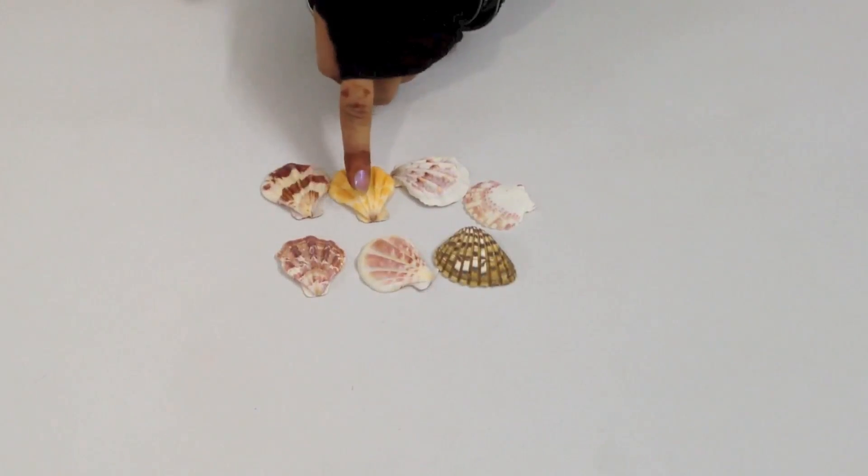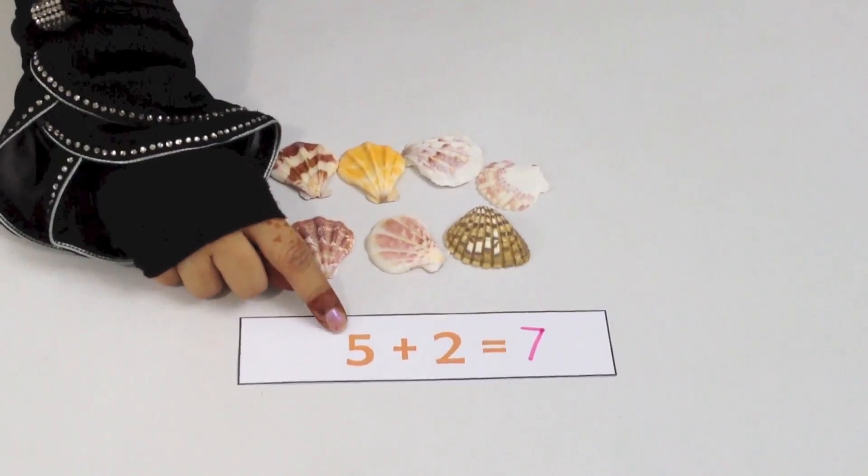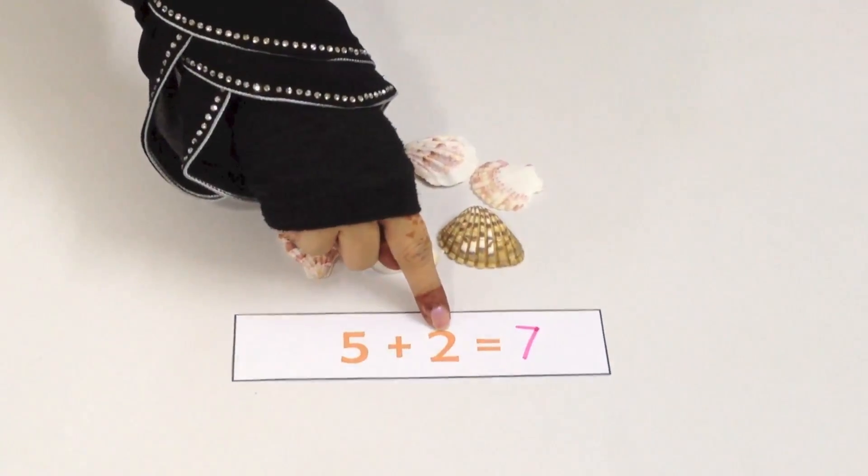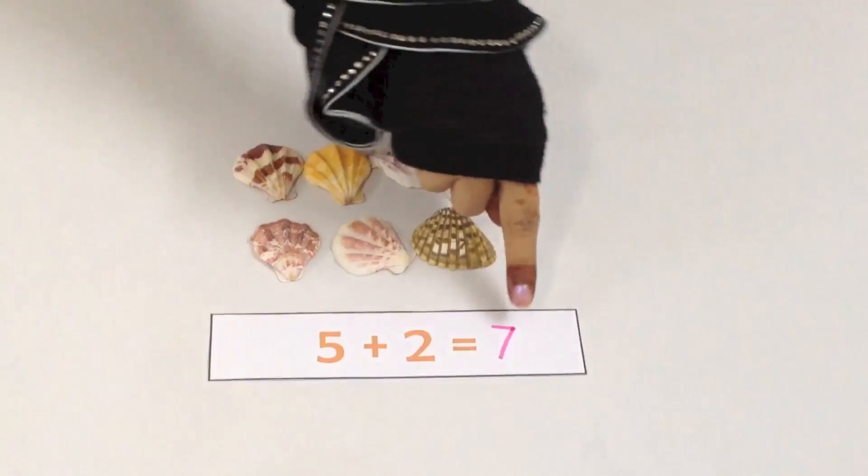We are now going to add all of them together: one, two, three, four, five, six, seven. The boy first had five shells, then he got two more, so the total is seven.